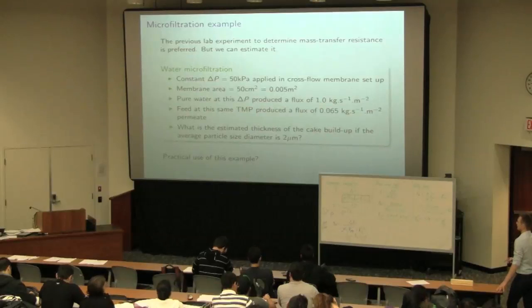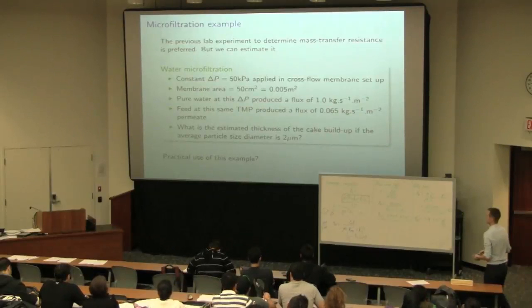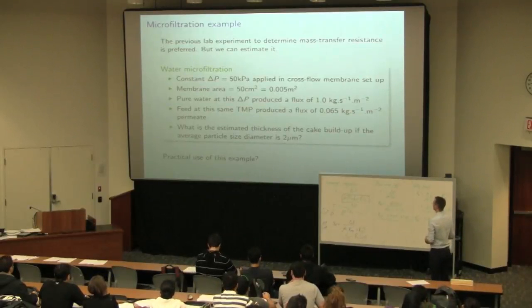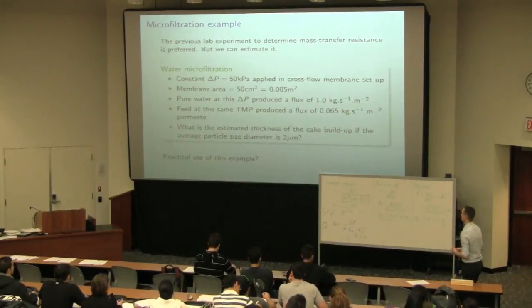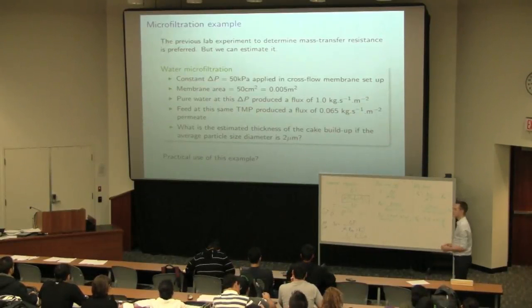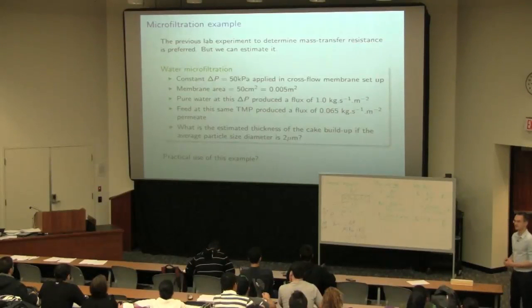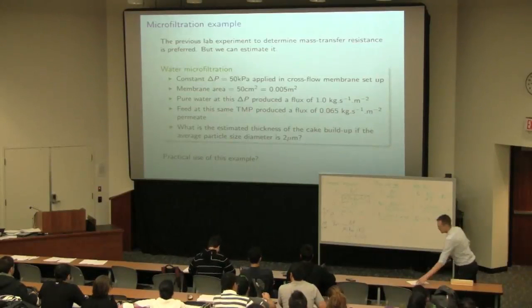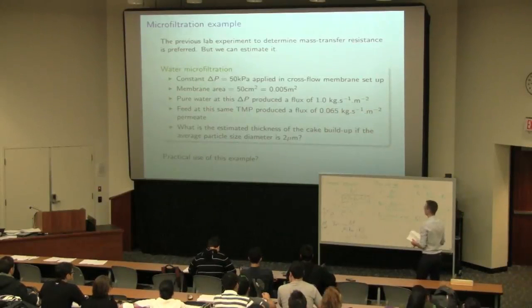The second part of the question is we're given the feed now with solids at the same transmembrane pressure drop. And we're getting a lower flux, which is expected because we now have solids in that feed that are caking up against the membrane. What is an estimated thickness of the cake buildup if we've got that particle size diameter? So let's do the first part of the question very quickly. That's to estimate the membrane resistance.